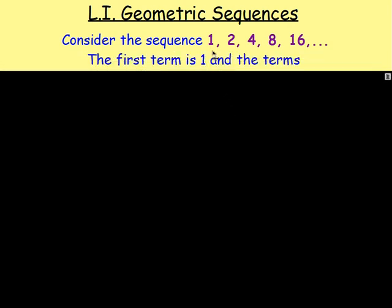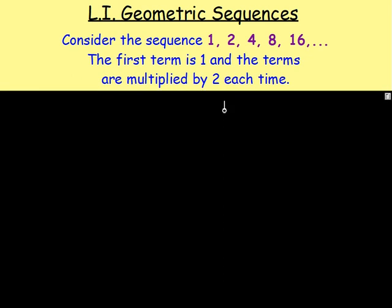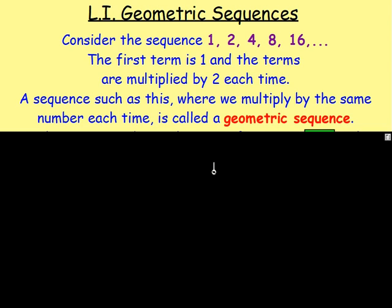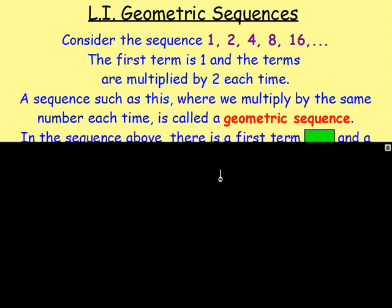Here you can see that the first term is one, and the terms are multiplied by two each time. Because we are not adding the same thing, it is not an arithmetic sequence. It is known as a geometric sequence. A geometric sequence is where you multiply by the same number each time.